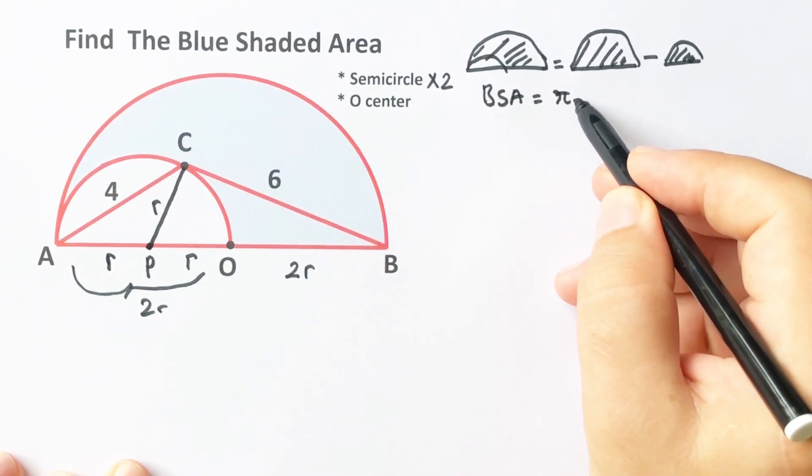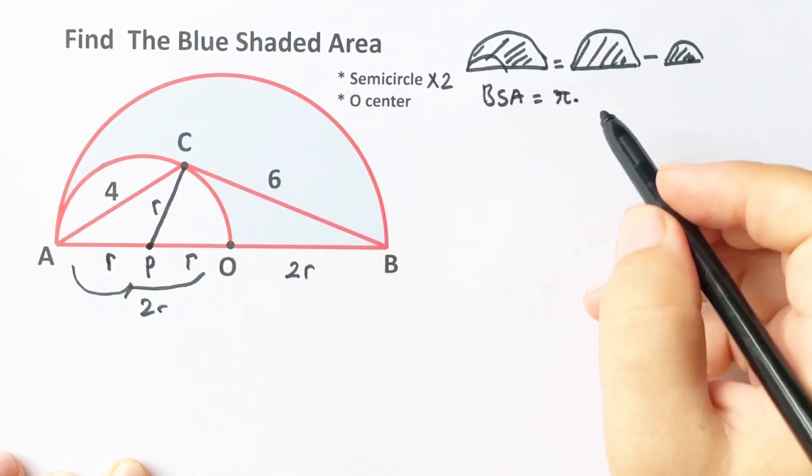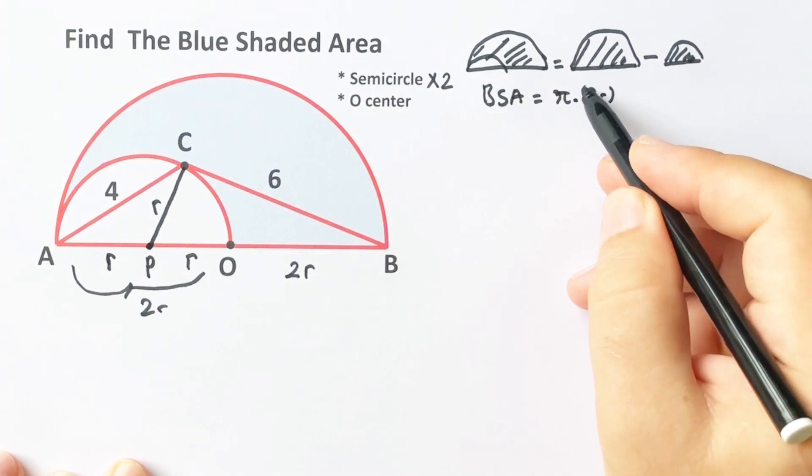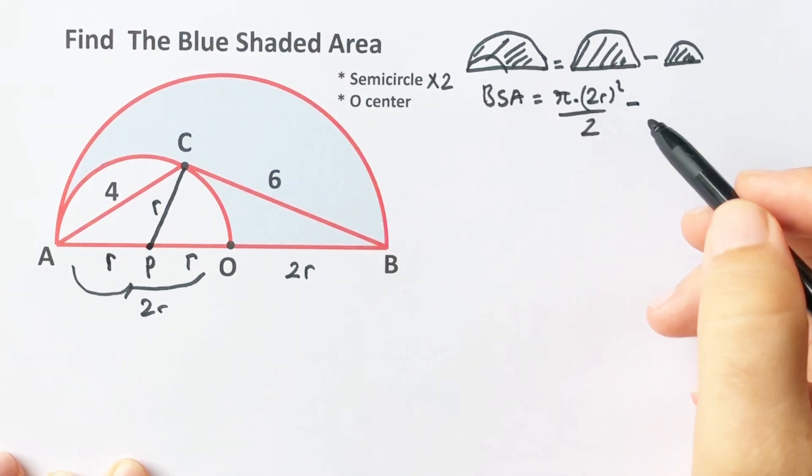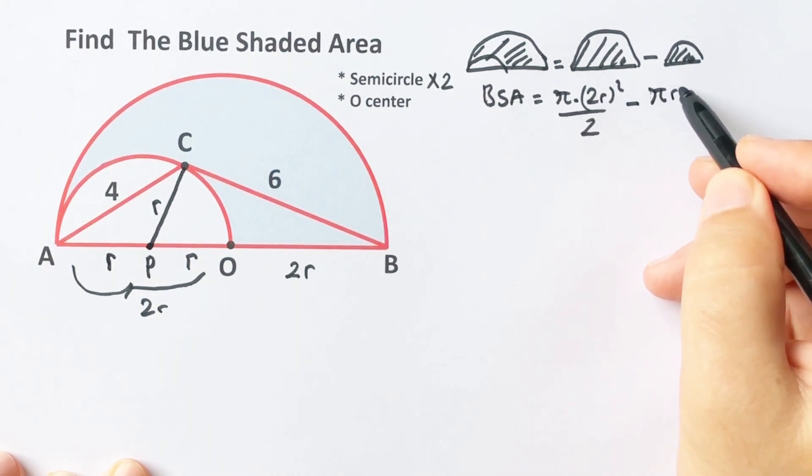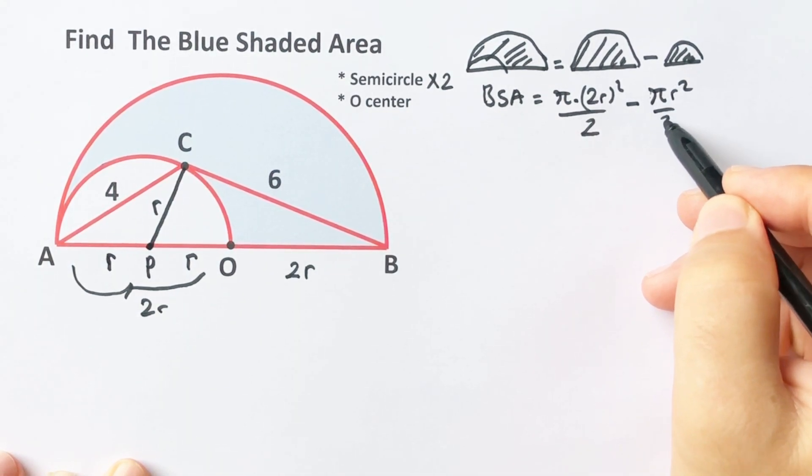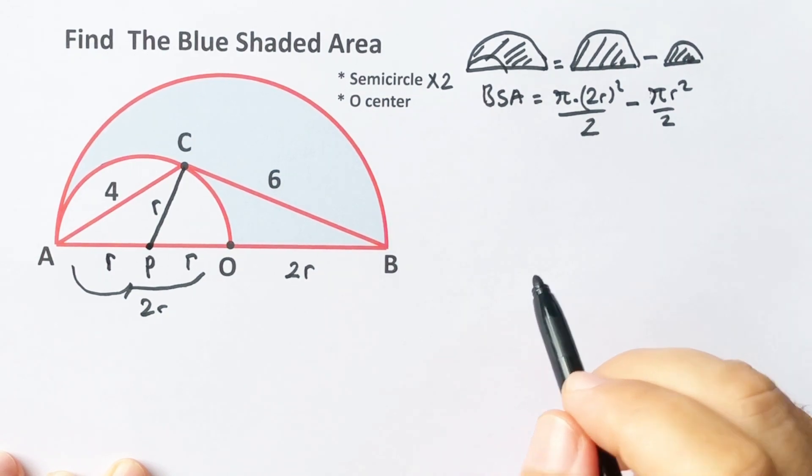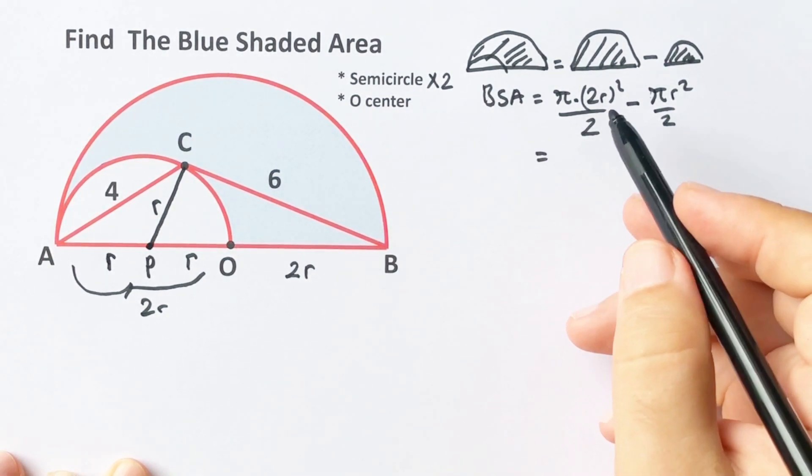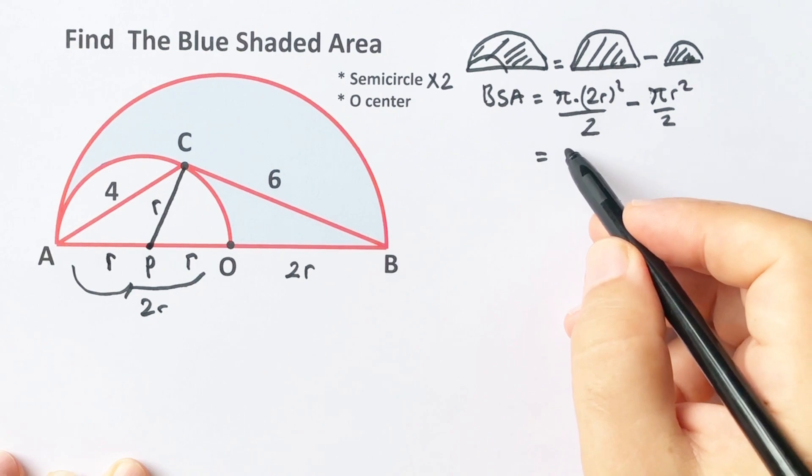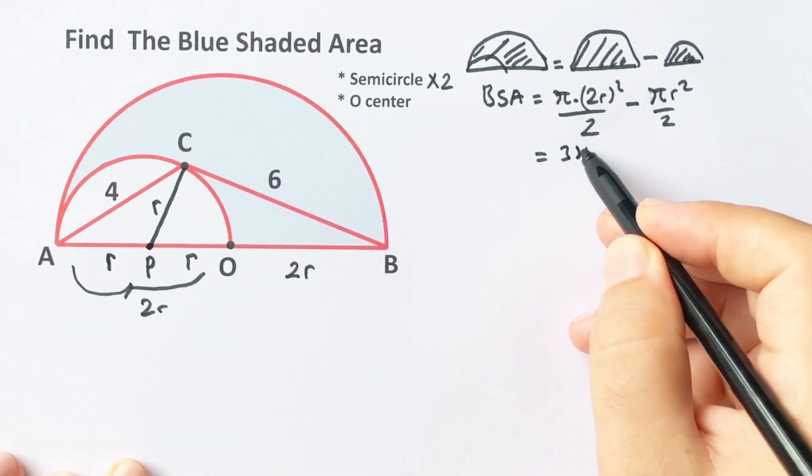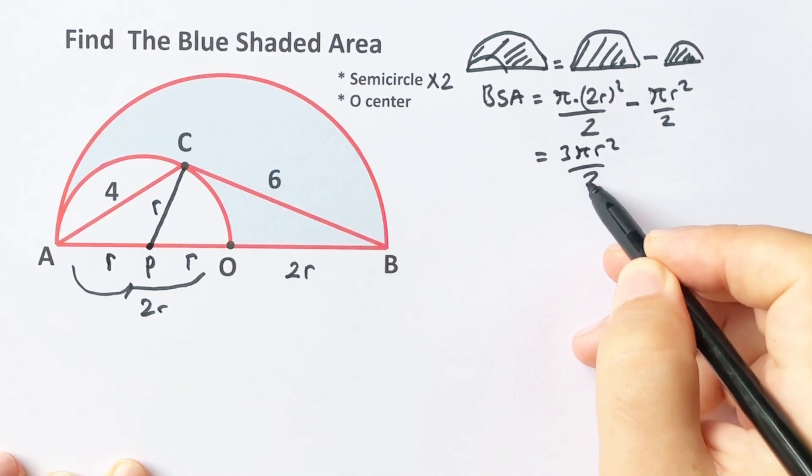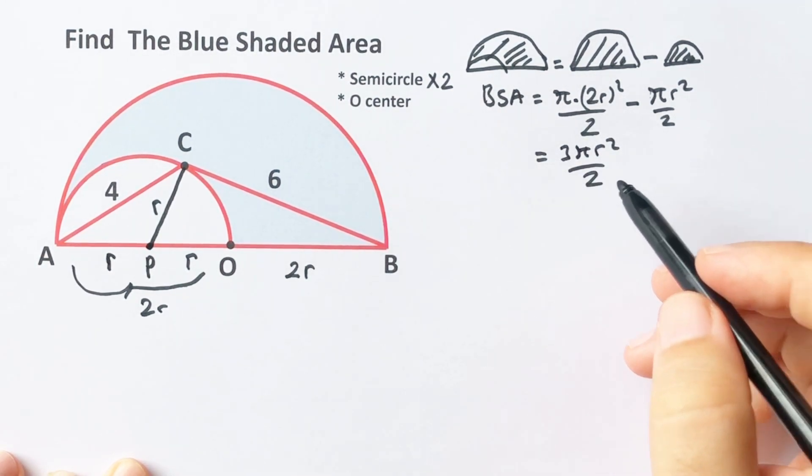Therefore, bigger semicircle area equals πr² over 2, where r equals 2r, minus small semicircle area equals πr² over 2. Therefore, blue shaded area equals 3πr² over 2.